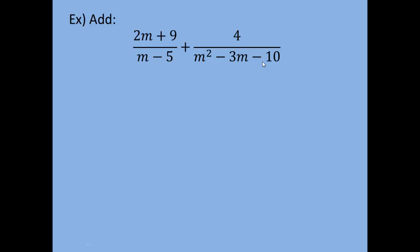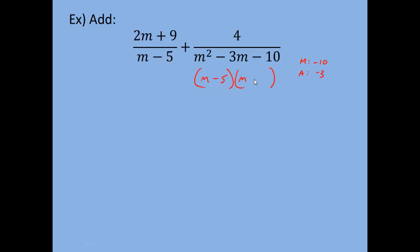Our first step is to factor each denominator completely. For the first fraction, m minus 5 is already in its most simplified form. For the second fraction, m² − 3m − 10, we factor into two sets with m at the front. We need numbers that multiply to negative 10 and add to negative 3. Those numbers are negative 5 and positive 2: negative 5 times 2 gives negative 10, and negative 5 plus 2 gives negative 3. So it factors as (m − 5)(m + 2).